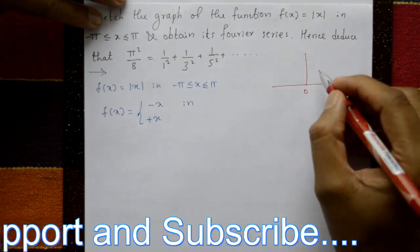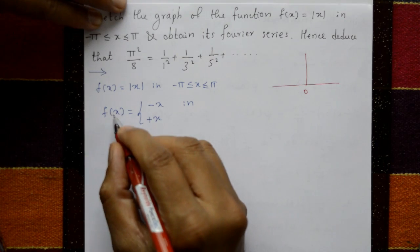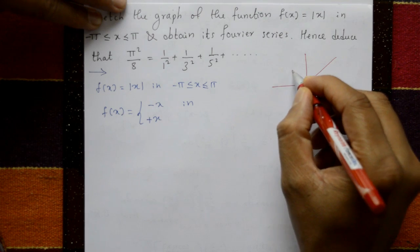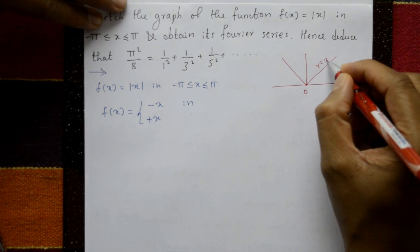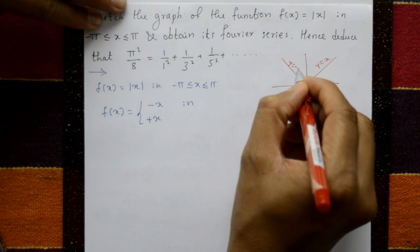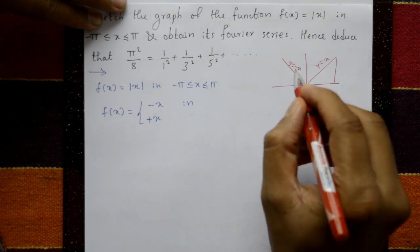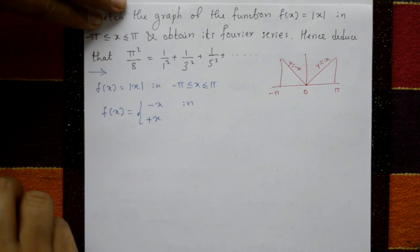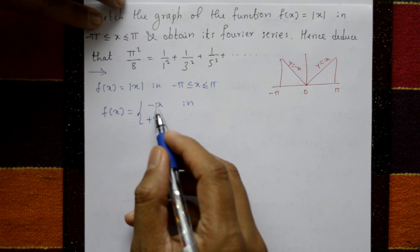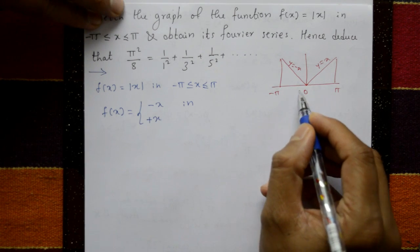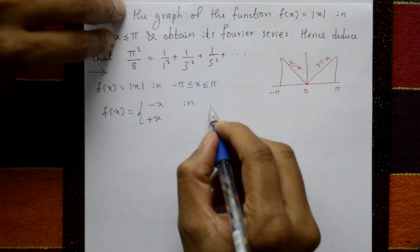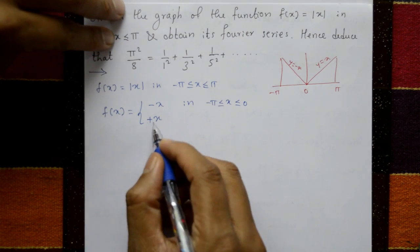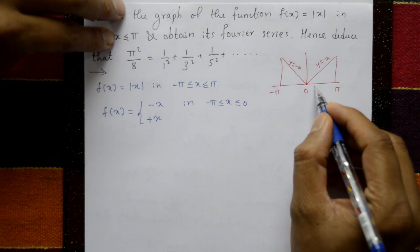The diagram shows y = x and y = -x. This is -π and this is +π. f(x) = -x is defined for -π ≤ x ≤ 0, and f(x) = +x is defined for 0 ≤ x ≤ π.